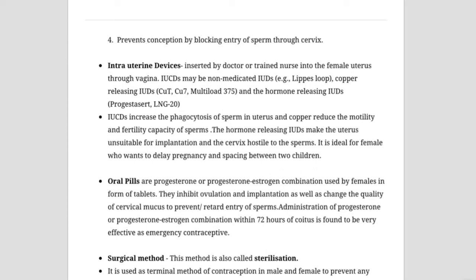Intrauterine devices are inserted by a doctor or trained nurse into the uterus. These are mostly made of copper — for example, Copper-T, Lippes loop. Some IUDs also contain hormones, for example LNG-20 and Progestasert. These intrauterine devices can be used to create gaps of three, five, or seven years between pregnancies.